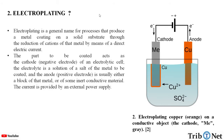There are different types of electrolytic deposition processes. The first one is electroplating. Electroplating is a general name for the process that produces a metal coating on a solid substrate through the reduction of cations of that metal by means of a direct electric current. The part to be coated acts as a cathode, which is the negative electrode of an electrolytic cell. The electrolyte is a solution of a salt of the metal to be coated, and the anode, which is the positive electrode, is usually either a block of that metal or of some inert conductive material. The current is provided by an external power supply. Here we can see the electroplating of copper on a conductive object.